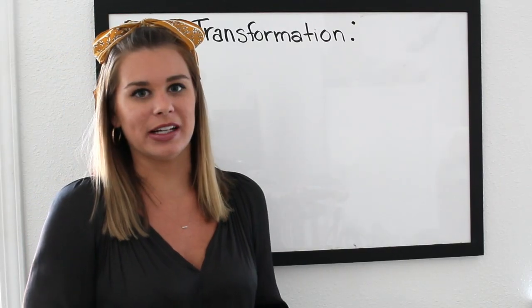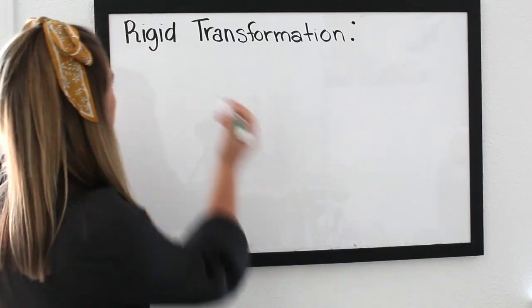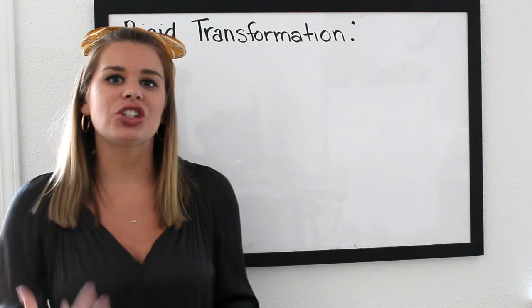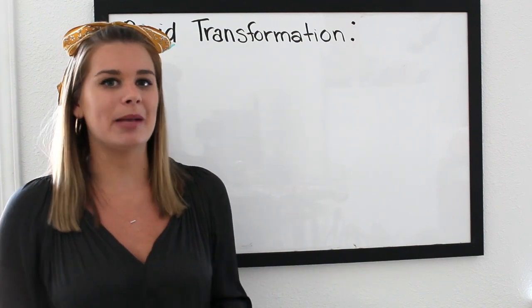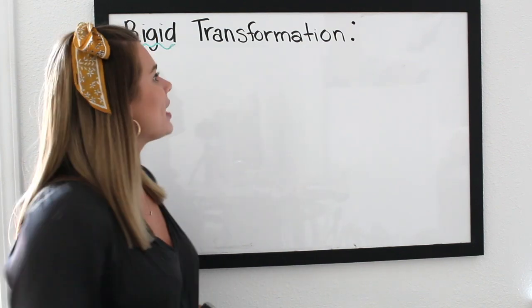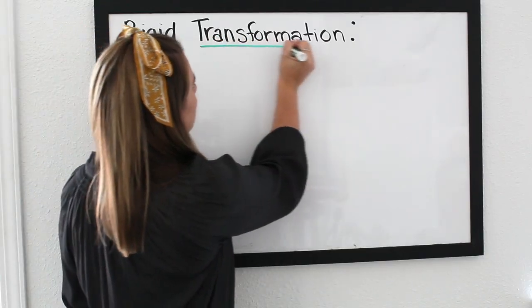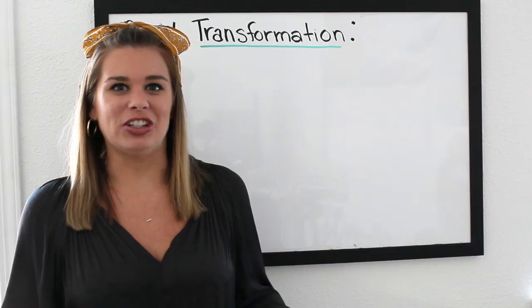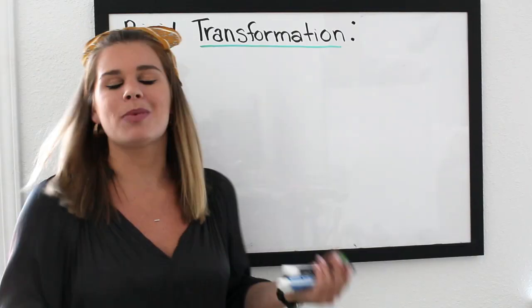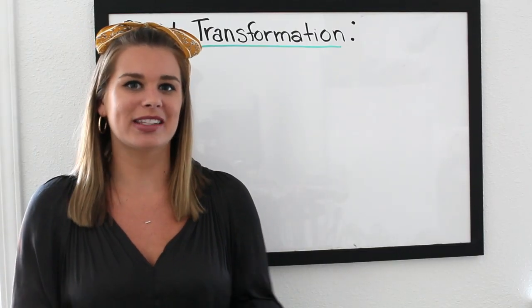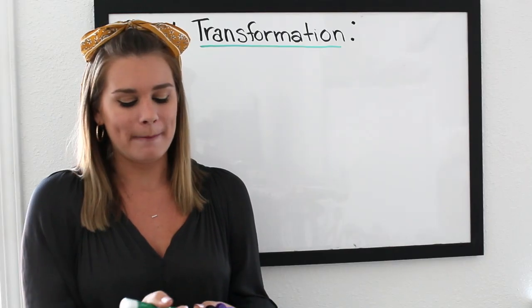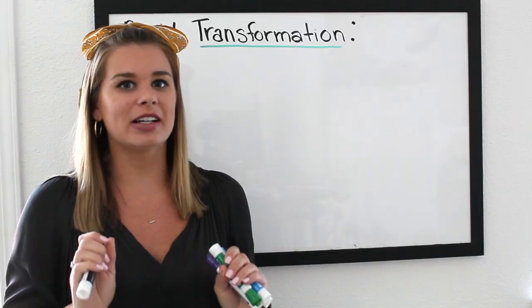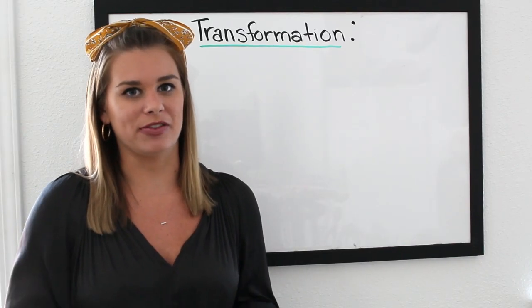So we have two words here. We're going to start with the word 'rigid.' Rigid means unchanging, or something that's not able to be changed. Whereas the word 'transformation' means we're drastically going to change it. So it kind of sounds like when we put these two words together, it's kind of like an oxymoron. But in geometry, a rigid transformation is a very specific type of transformation.